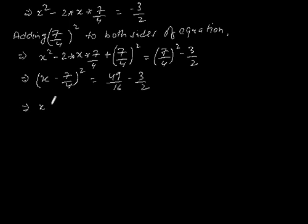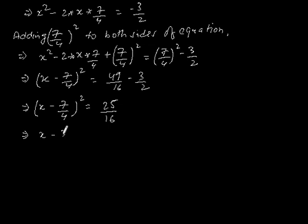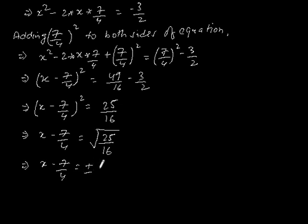Which implies x minus 7 by 4, whole squared, is equal to — solving this — 25 by 16. Which implies x minus 7 by 4 is equal to the square root of 25 by 16, which gives x minus 7 by 4 is equal to plus or minus 5 by 4. Therefore x is equal to 7 by 4 plus or minus 5 by 4.